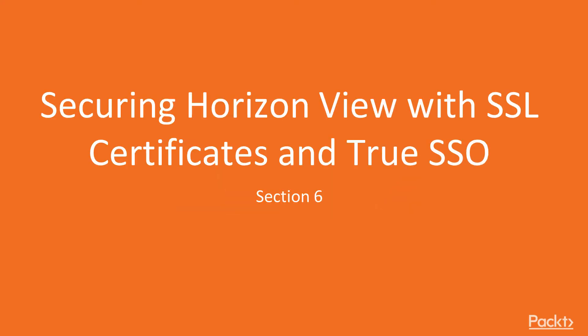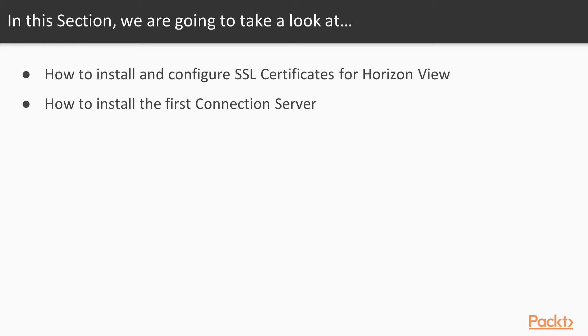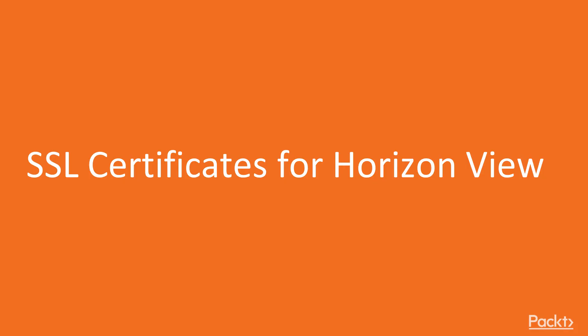Hello and welcome to Section 6: Securing Horizon View with SSL Certificates and TrueSSO. In this section we will discuss the security aspects of VMware Horizon View 7, and in particular how we deliver secure communication not only with end user clients but also between the different view infrastructure components in the data center. To deliver this secure communication we're going to look at SSL Certificates and VMware TrueSSO. Let's move on to the first video and look at how to deploy SSL Certificates in your Horizon View environment.